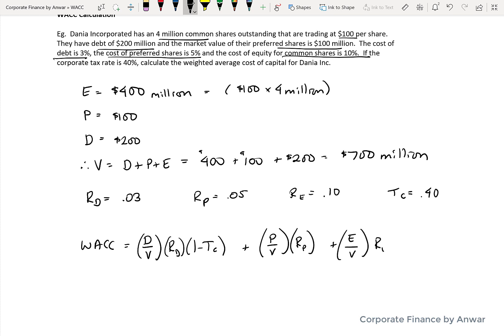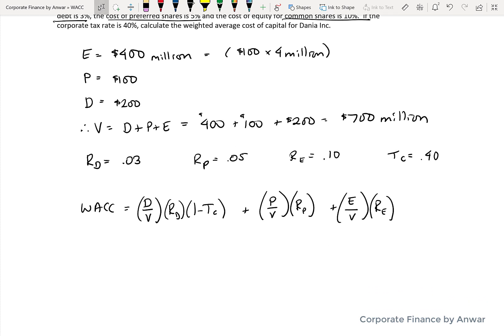that'll give us the debt portion. And then preferred shares divided by value times the cost of preferred. And similarly, common shares divided by the value times the cost of common equity.